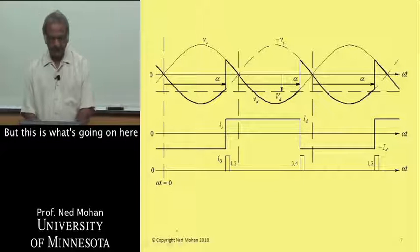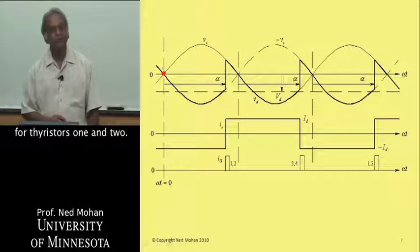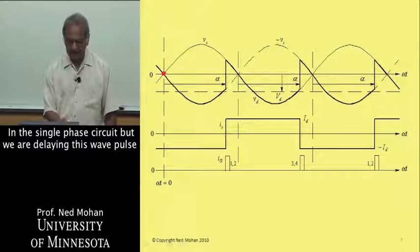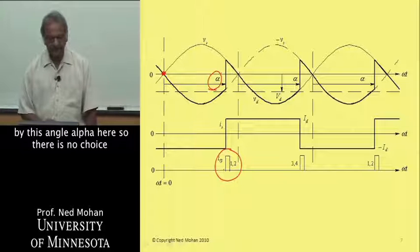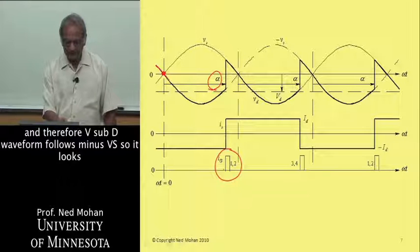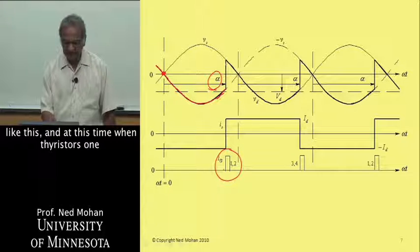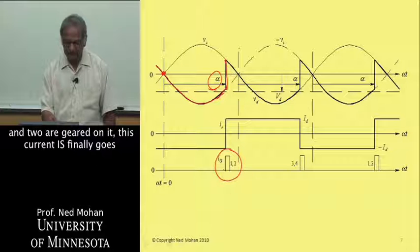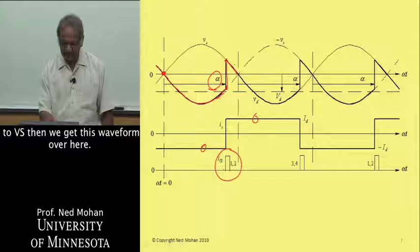This is the instant of natural conduction for thyristors 1 and 2 in the single-phase circuit, but we are delaying the gate pulse to thyristors 1 and 2 by this angle alpha. So thyristors 3 and 4 have to keep on conducting, and therefore the V-sub-D waveform follows minus V-sub-S. At the time when thyristors 1 and 2 are gated on, the current I-sub-S goes from negative to positive, and then V-sub-D equals V-sub-S, giving this waveform.